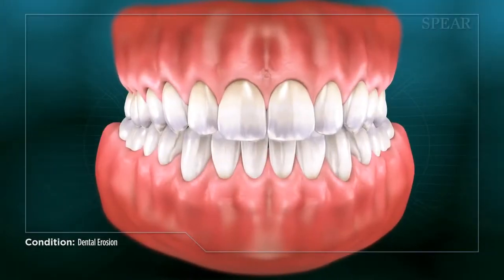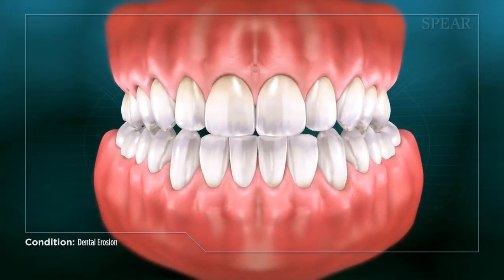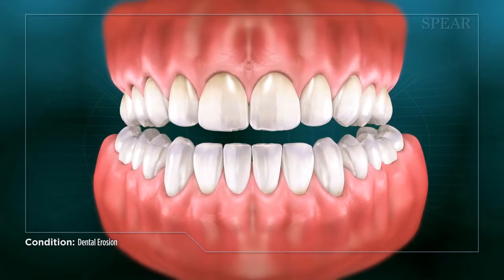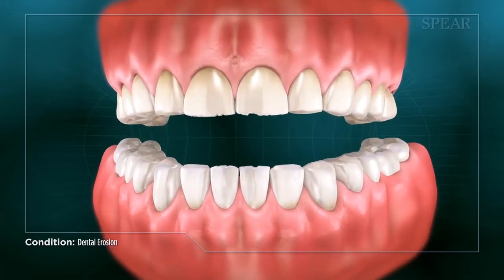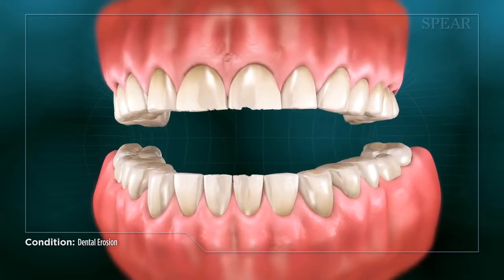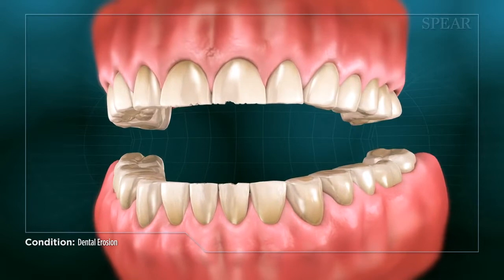Dental erosion is a condition where tooth structure is lost due to corrosion, chemical reactions dissolving the hard, protective coating of the teeth known as enamel.